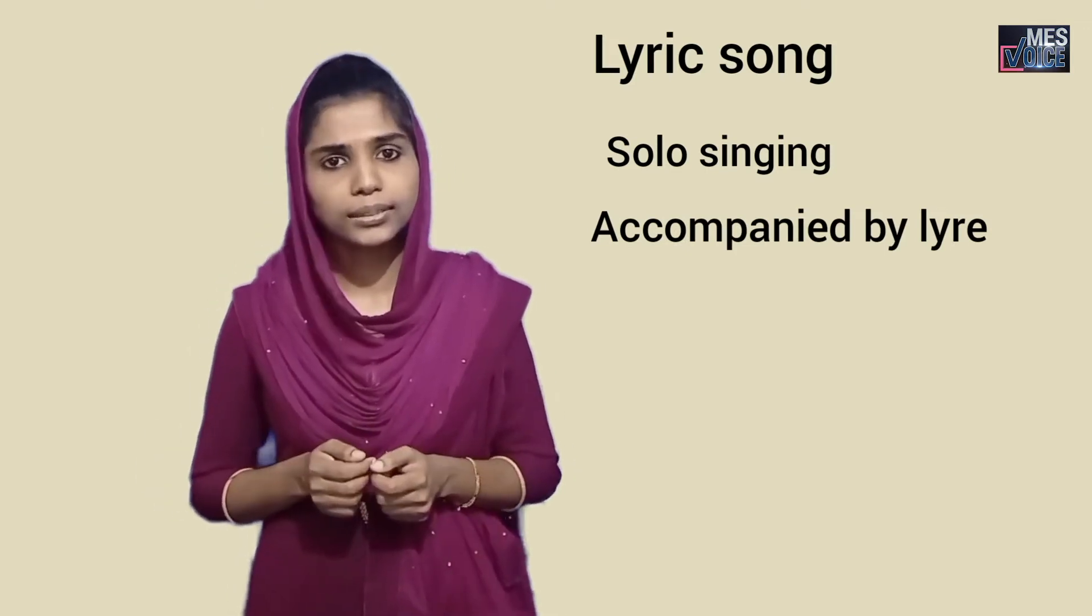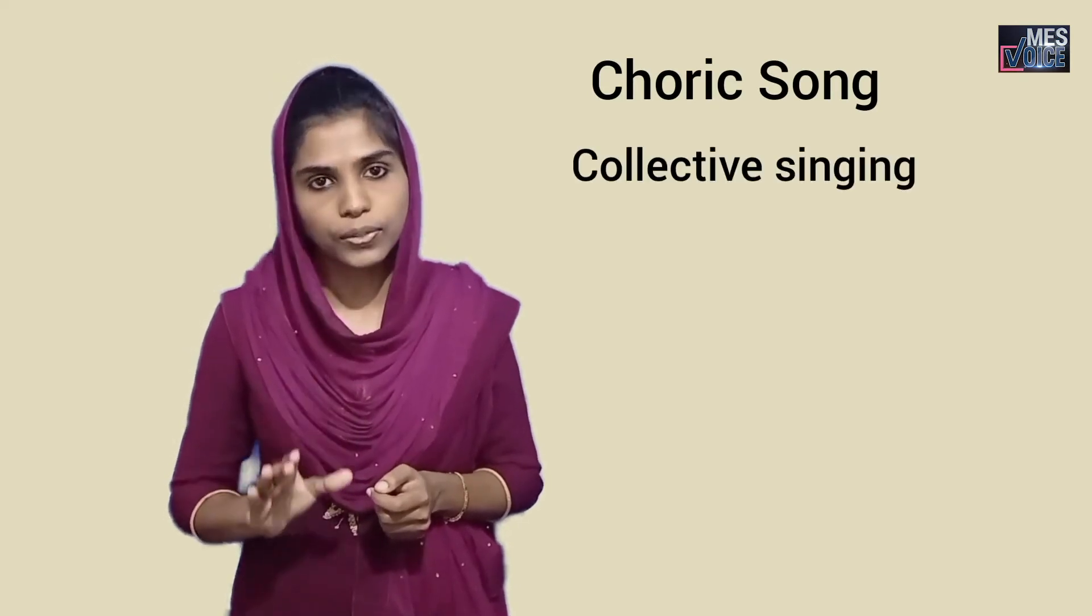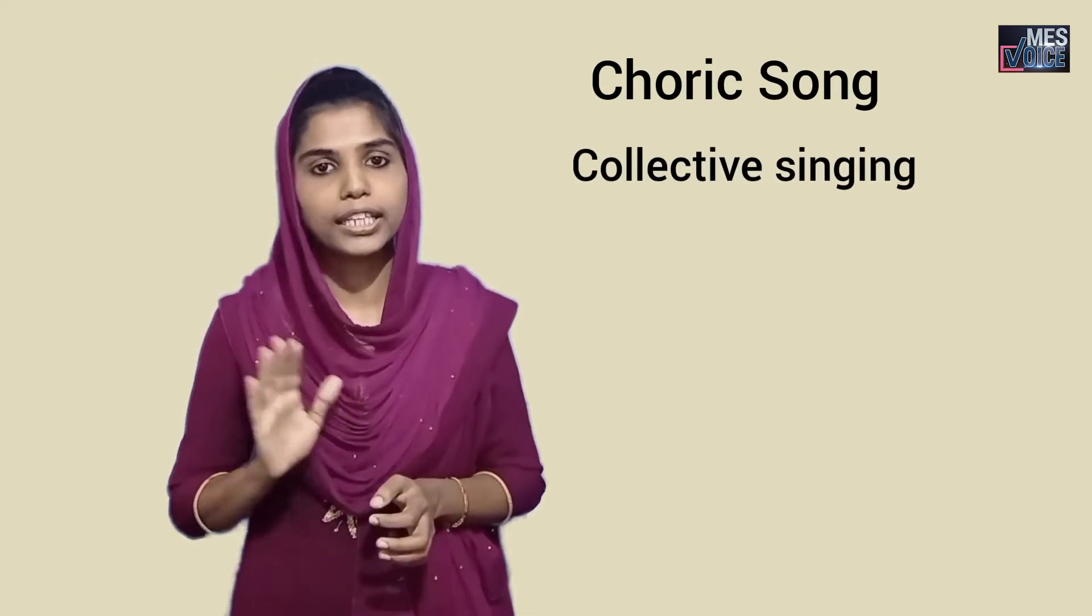What is a Lyre? A Lyre is a stringed musical instrument. And the Choric song was meant for collective singing accompanied by instrumental music. So there are two types of songs in Greek: the Melik or Lyric song and the Choric song. The Lyric song was meant for solo singing whereas the Choric song was meant for collective singing.